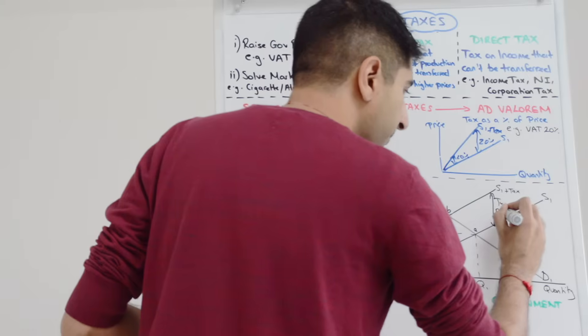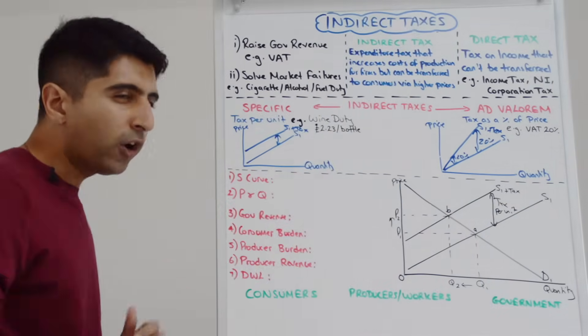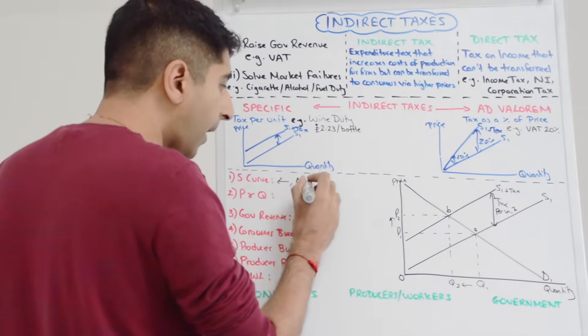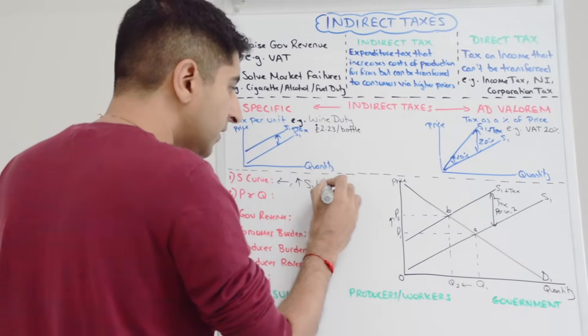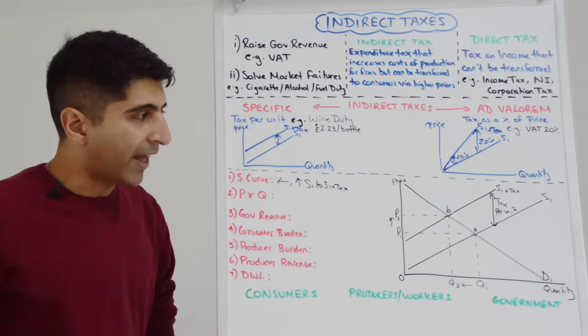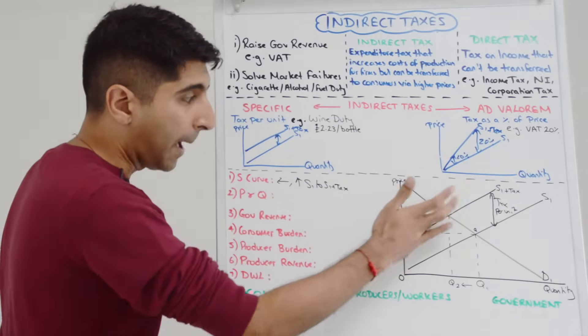And that is because the vertical distance here between the two supply curves represents in this situation the tax per unit. So when we talk about the supply curve you can say it shifts to the left, but better say it shifts upwards from S1 to S1 plus tax.